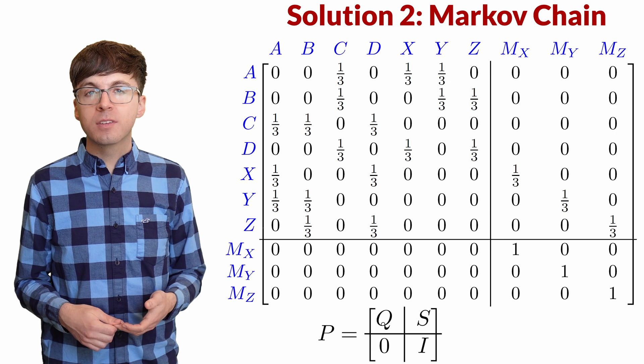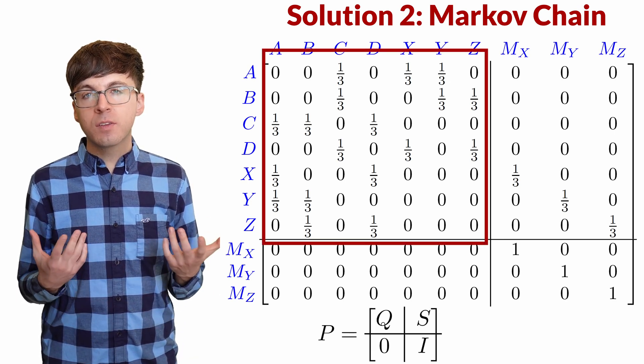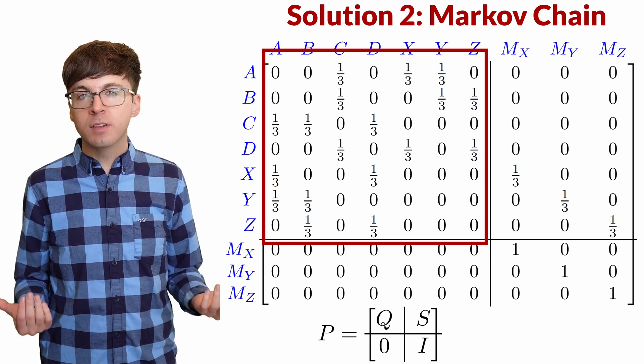We partition the transition matrix. This upper left portion we'll call Q. It represents the transient states. Eventually, when playing the game, we'll have to leave these states, since eventually the monster eats the potato.